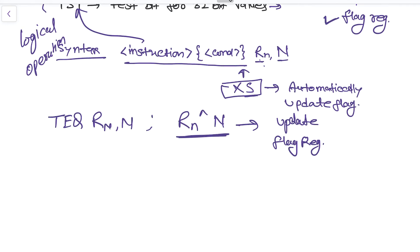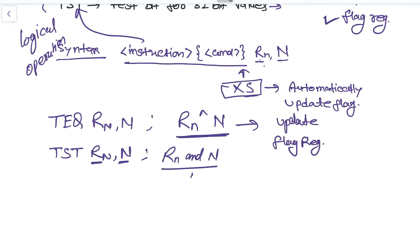Then there is TST with Rn and N. In this case it compares the 32-bit values of these two registers by performing the AND of Rn and N. As per the result of this AND operation, it updates the status flag register — that is the SPSR and the CPSR.